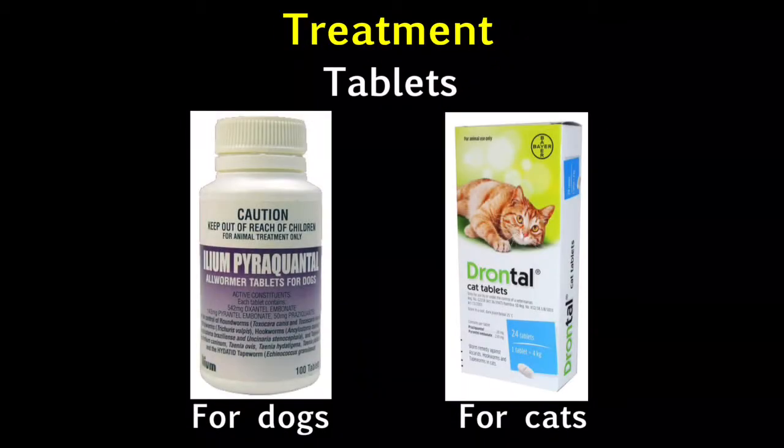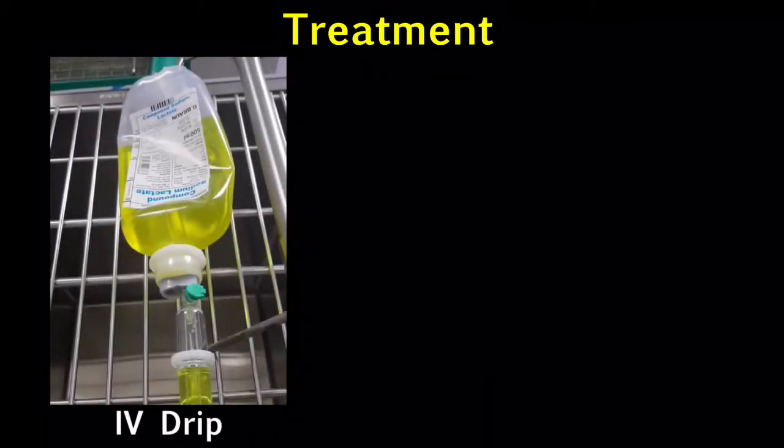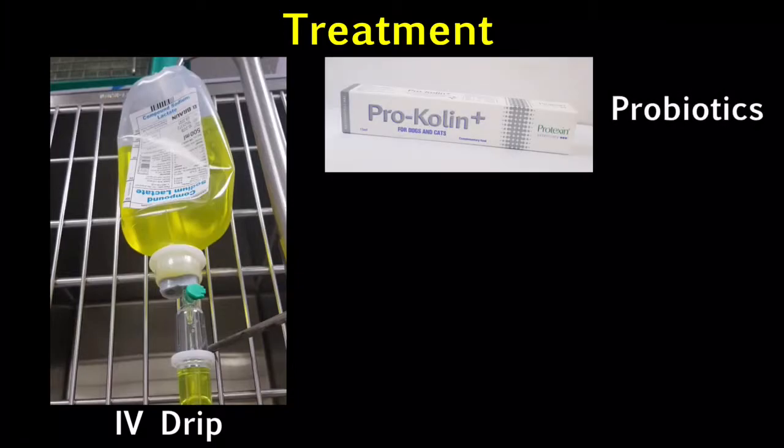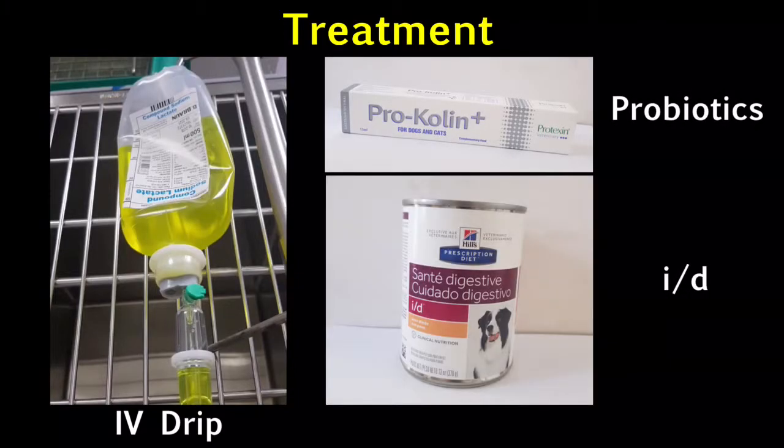Typically, tablets would be given and these tablets are able to treat the common parasites in cats and dogs. For the chihuahua, it was also given an IV drip, probiotics, and medication to ease its upset digestive system.